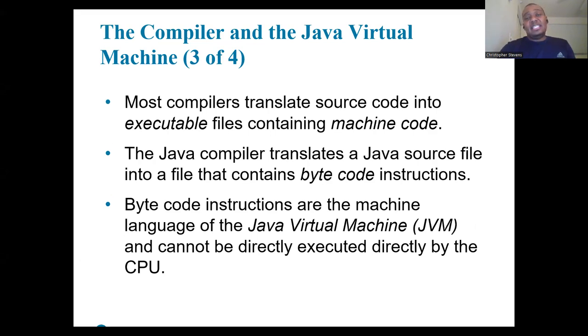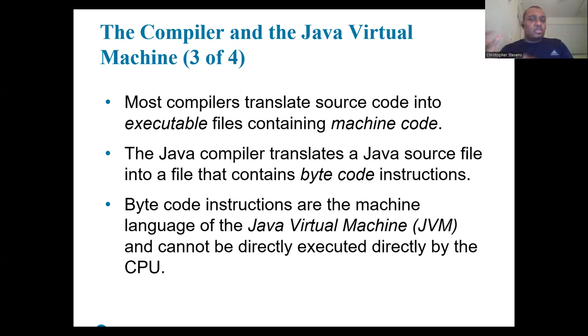A compiler translates this source code into an executable form. For Java, this means converting your source code into bytecode, which the Java Virtual Machine, or JVM, can interpret and execute.